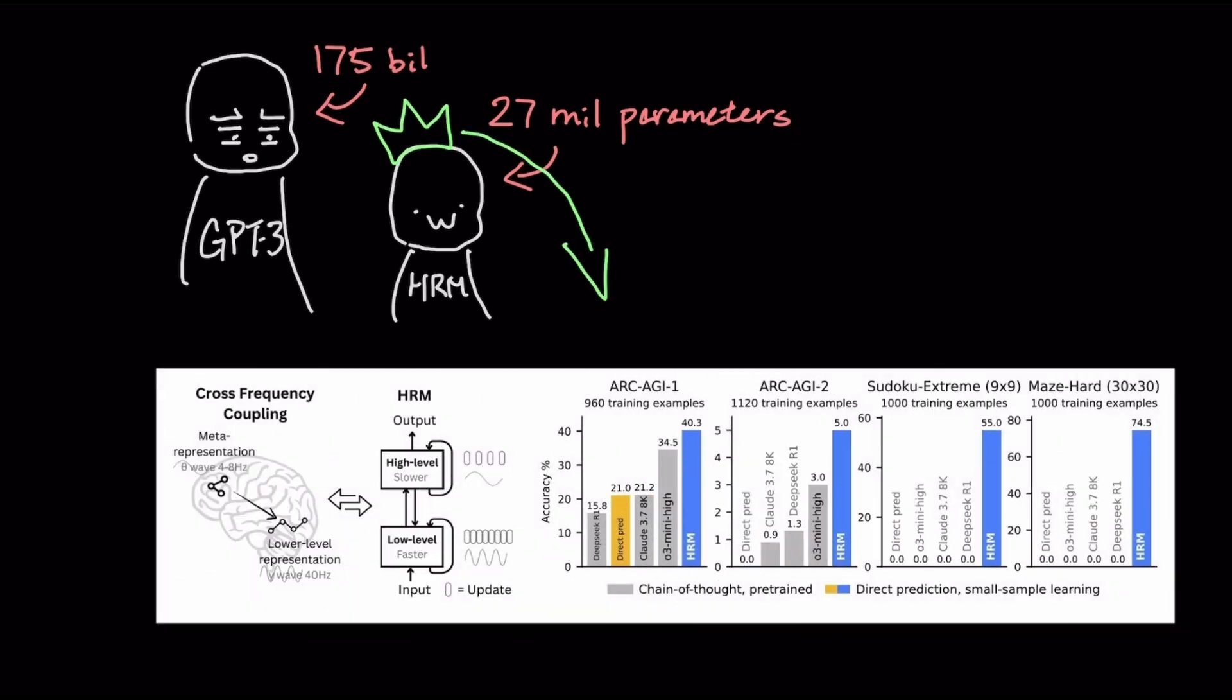On the difficult Arc AGI reasoning benchmark, the hierarchical reasoning model scored 40.3%, surpassing models like Claude 3.7.